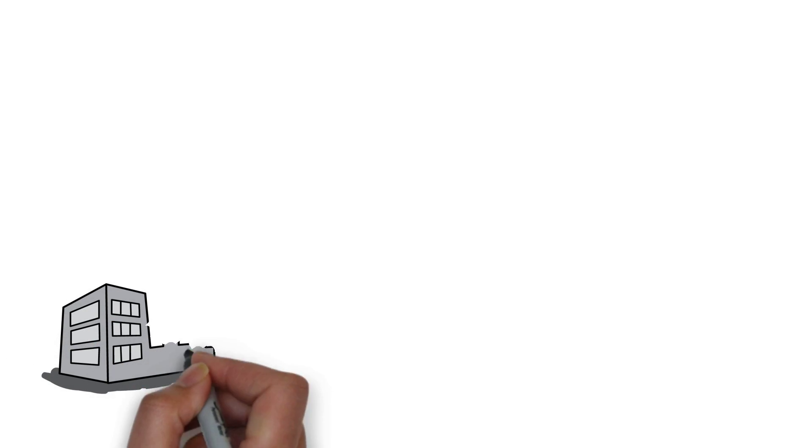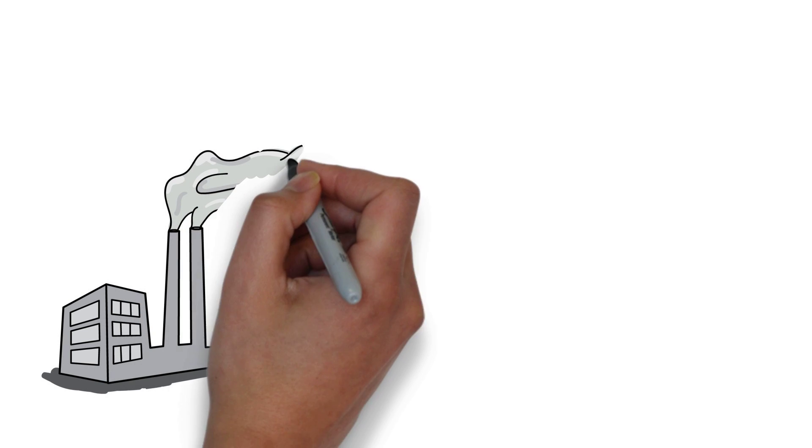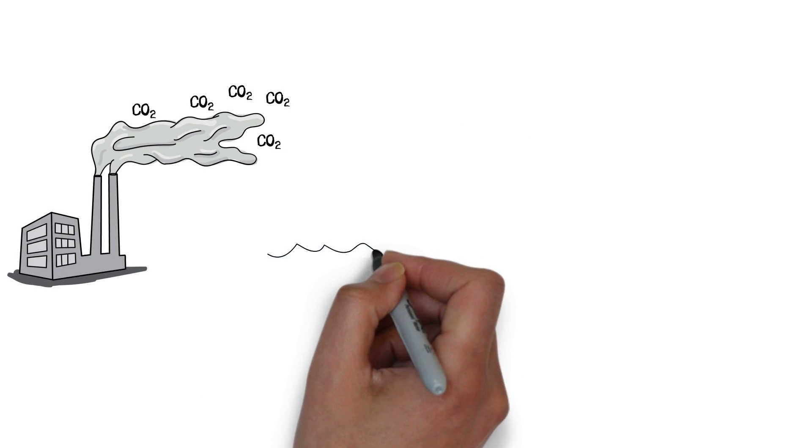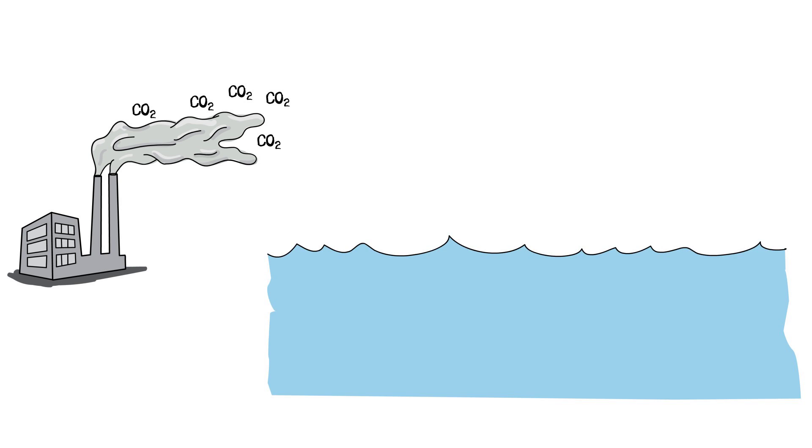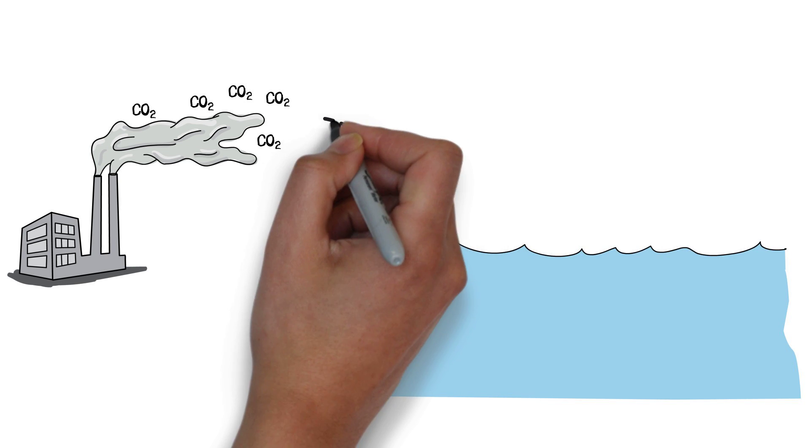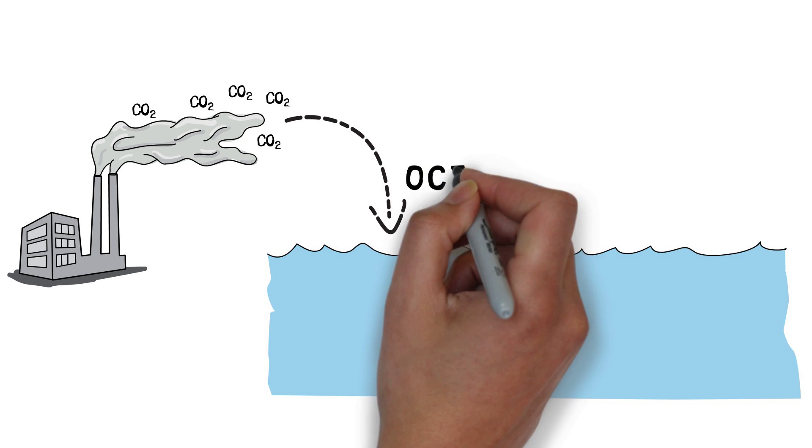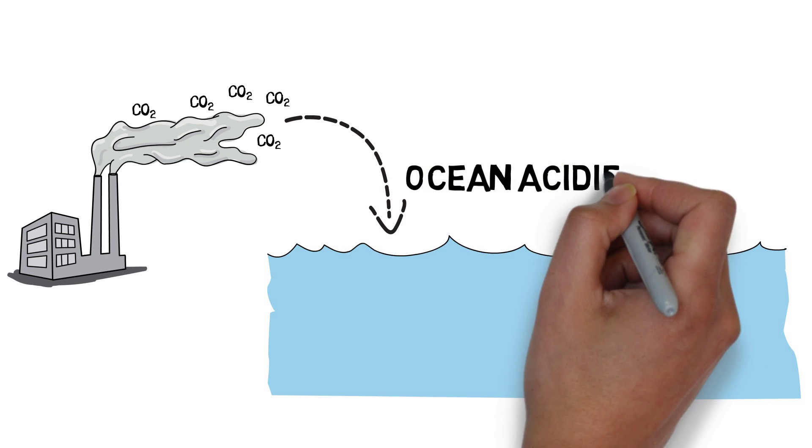But there is a problem. Far away from you, humans are burning fossil fuels like crazy. Unfortunately for you, about a third of the carbon that humans are releasing in the atmosphere is dissolving in the ocean and changing its chemistry, in a process called ocean acidification.